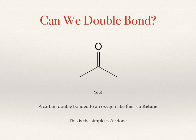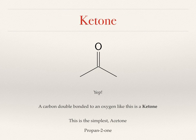Oxygen likes to form two bonds, and in alcohols it forms one bond to carbon and one to hydrogen. What if we let it make both bonds to carbon? An oxygen double bonded to carbon, which is also bonded to two other carbons, is called a ketone. The simplest ketone is shown on the slide and is commonly called acetone. Ketones add their own suffix: the formal name for acetone is propan-2-one, where the suffix '-one' is added and the '2' indicates the oxygen is bonded to the second carbon. We can see three carbon atoms, the second carbon double bonded to oxygen — propan-2-one.